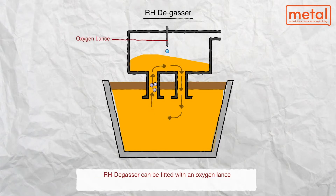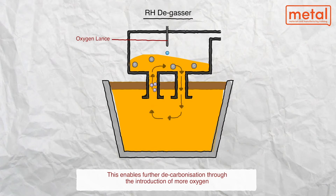To treat the liquid steel, the degasser vessel is lowered until the two nozzles are immersed in the steel in the ladle. The pressure in the vessel is then reduced by the pumping system.